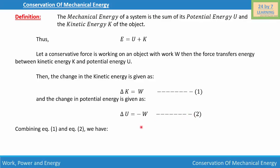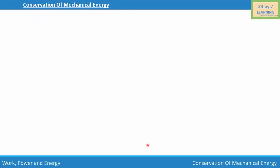Now I'm going to combine equation 1 and equation 2. As you can see, the right-hand side of both equations is W, so I can substitute one of these terms for W. If I do that, we get ΔK = -ΔU.